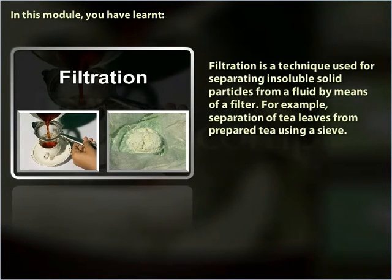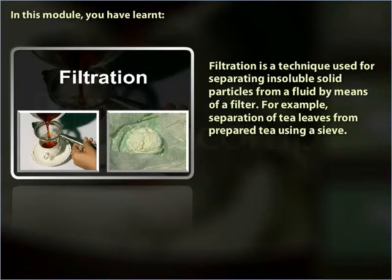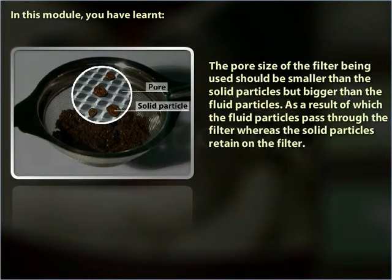In this module you have learned that filtration is a technique used for separating insoluble solid particles from a fluid by means of a filter — for example, separation of tea leaves from prepared tea using a sieve. The pore size of the filter being used should be smaller than the solid particles but bigger than the fluid particles, as a result of which the fluid particles pass through the filter whereas the solid particles are retained on the filter.